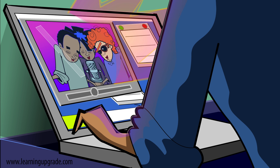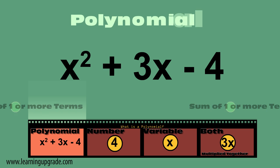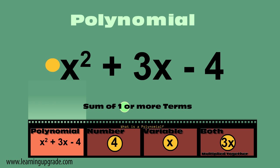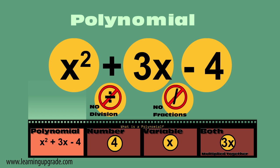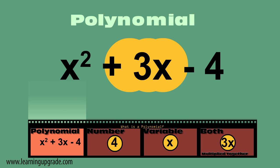What's a polynomial? It's the sum of one or more terms, x squared plus 3x minus 4, with no division and no fractions.